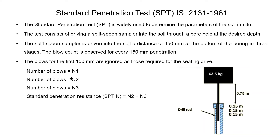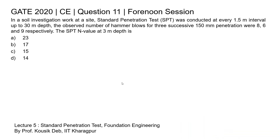If the number of blows for the first 150 millimeter penetration is n1, for the second 150 millimeter penetration is n2, and for the last 150 millimeter penetration is n3, then the standard penetration resistance, that is the SPT N value, is taken as n2 plus n3.